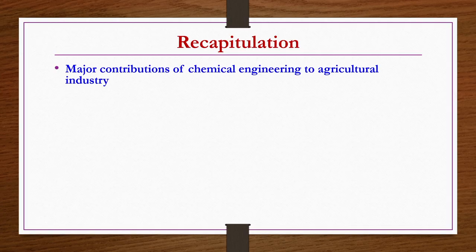We have seen what are the major contributions of chemical engineering to the agriculture industry — that is what we started this week. Chemical engineers have given tremendous contributions to the agricultural industry, especially in terms of production of fertilizers, pesticides, and several unit operations such as freeze drying, and in the food industry.